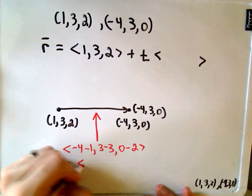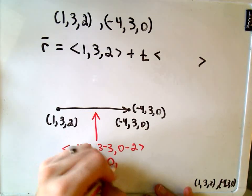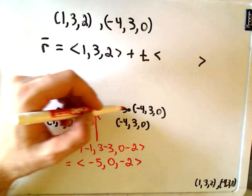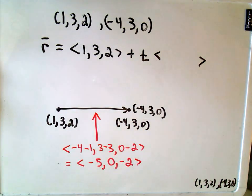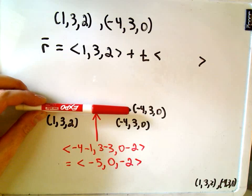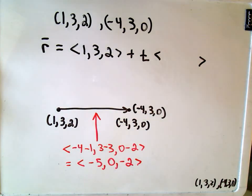That would be the equation of the vector that connects the point (1, 3, 2) to (-4, 3, 0). Well, certainly it's parallel to the line that goes through the two points. So now I can just use this ⟨-5, 0, -2⟩ as my parallel vector, so I'll simply drop that in there: ⟨-5, 0, -2⟩.